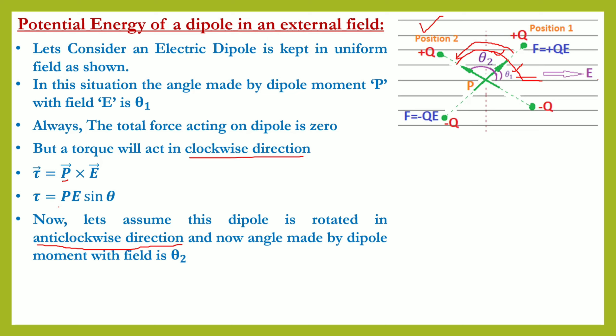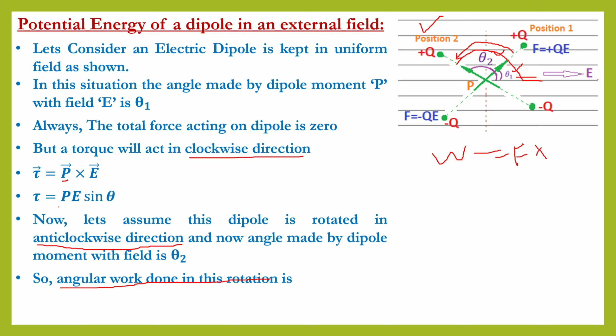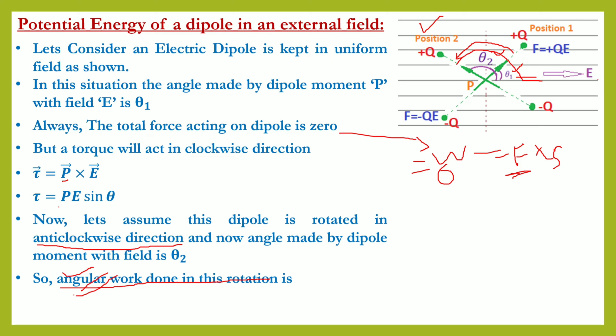Work done in this process: since F_net = 0, there is no linear displacement, so linear work done (W = F × displacement) is zero. But angular work done exists due to this rotation. So we need to calculate the angular work done. Just as linear work done = F × s, angular work done = torque × angular displacement. However, since this torque is not constant (theta is continuously changing), we cannot simply multiply — we must use integration.